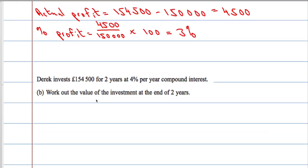Okay, he invests £154,500 for two years at 4% per year compound interest. Now compound interest is where you get interest on your interest. Work out the value of the investment at the end of two years. The amount is equal to the principal, what you invest, multiplied by 1 plus the rate to the number of years.